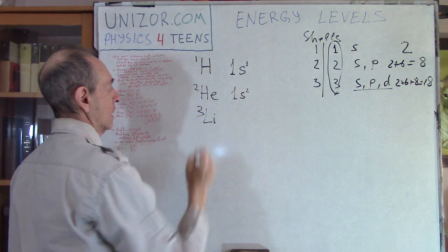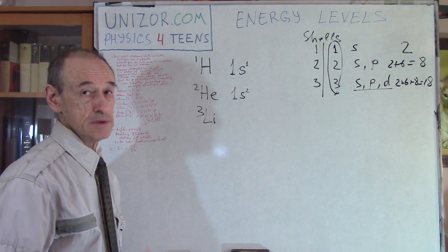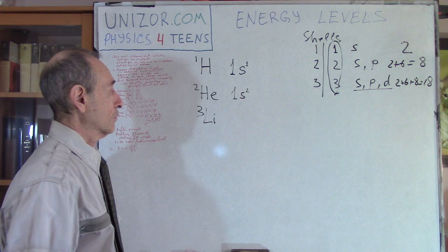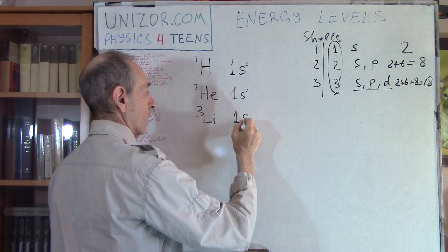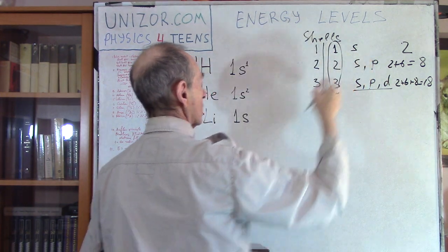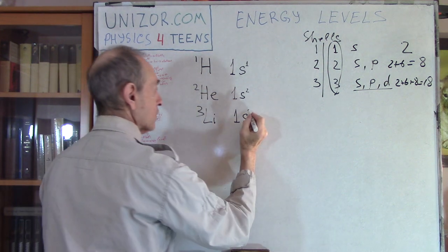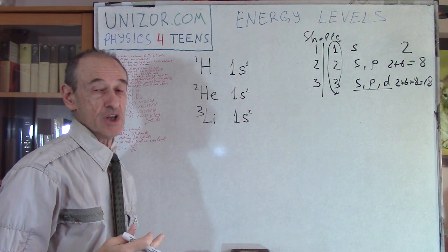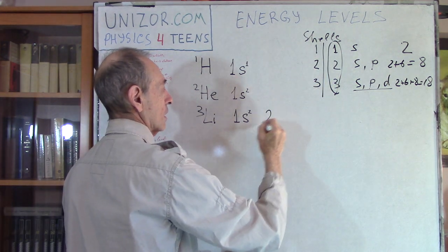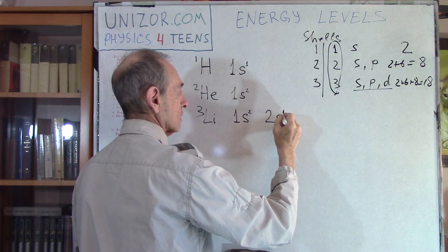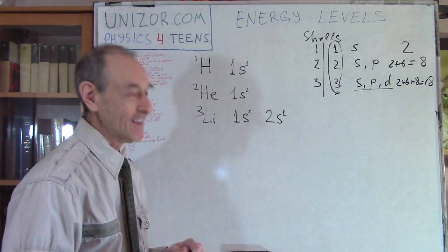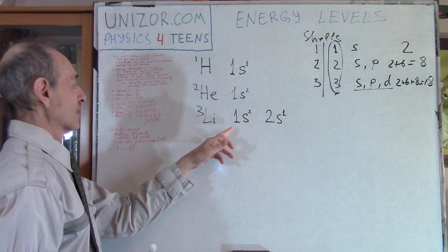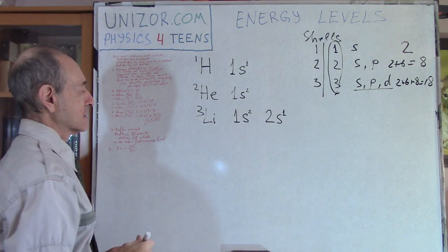Lithium has atomic number 3, meaning three protons and three electrons. The first shell has only one subshell — s — which can hold up to two electrons, so two electrons go there. But we have a third electron, and the first shell has no more subshells. So we go to the second shell and put that electron in its first subshell — giving configuration 1s² 2s¹.